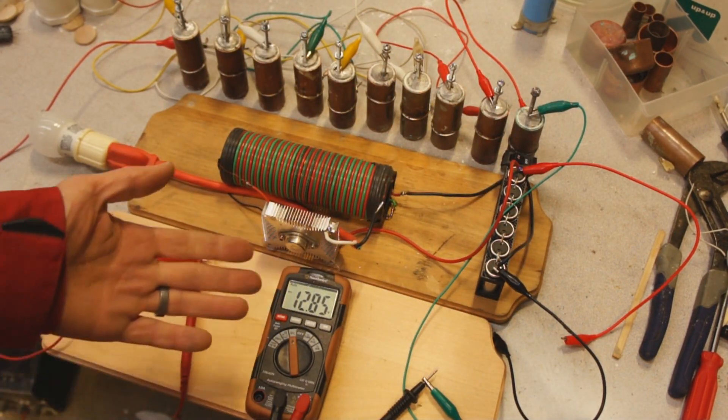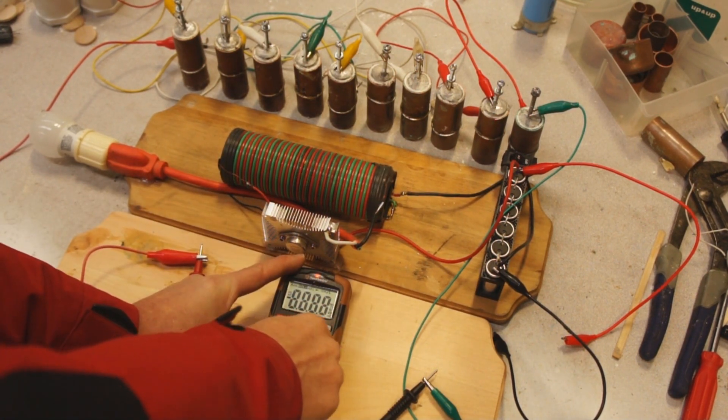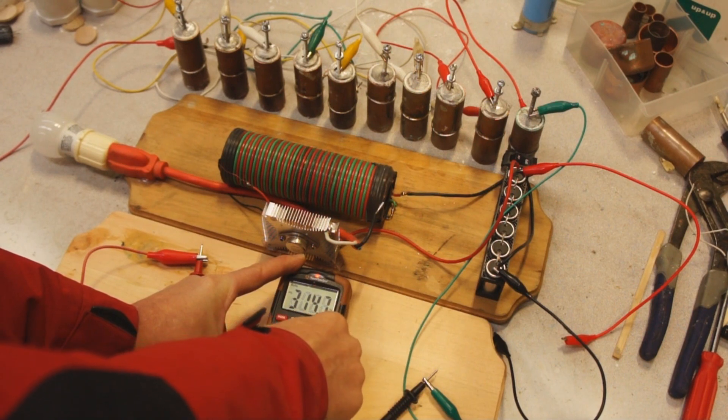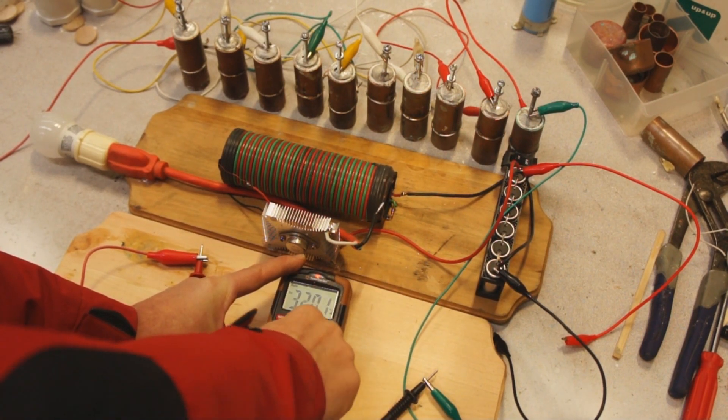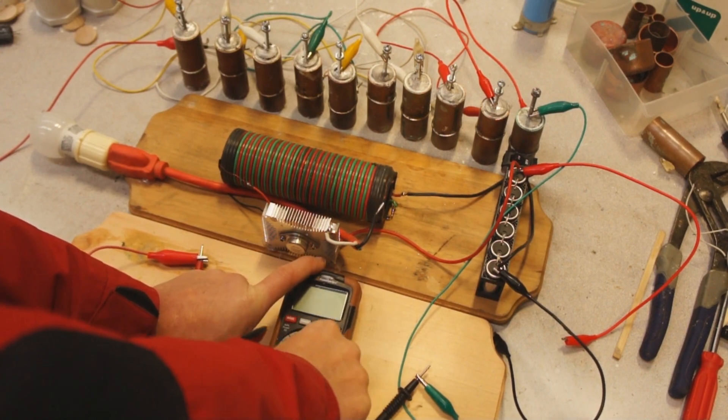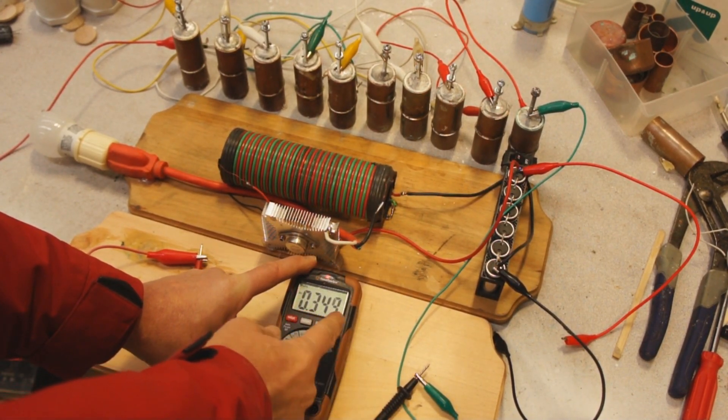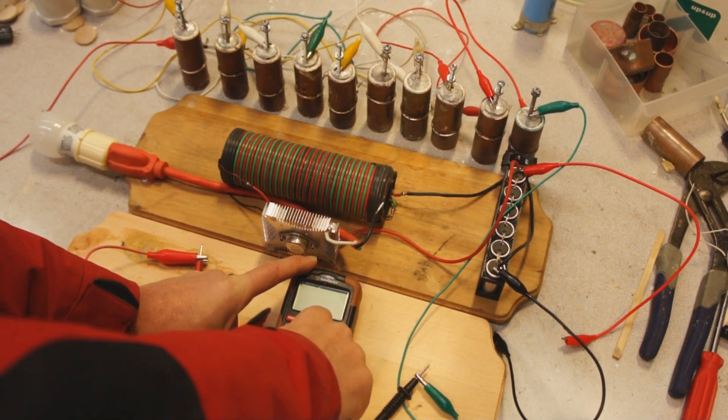You can see the voltage is about 13 volts and the amperage is 300 something milliamps. Let me move this over to the 10 amp setting. It's measuring 300 or so milliamps.